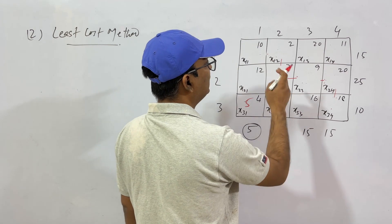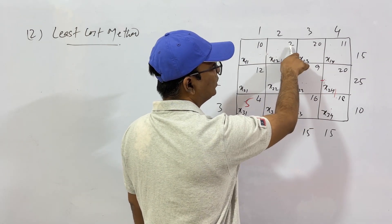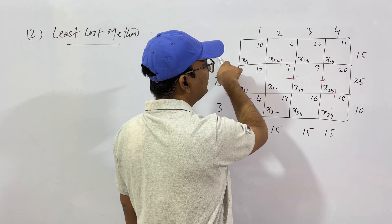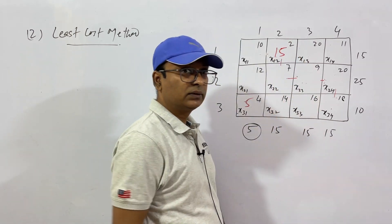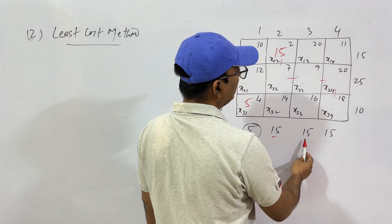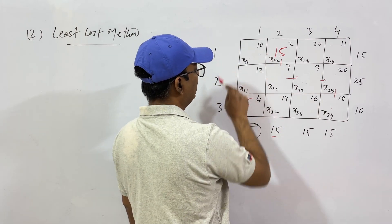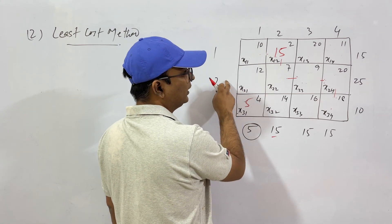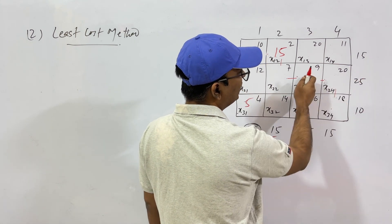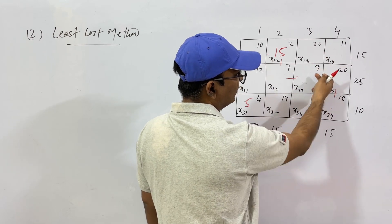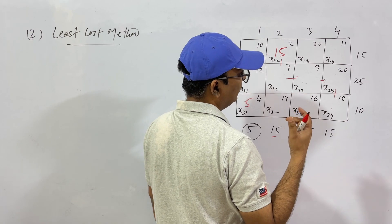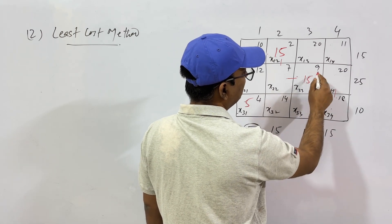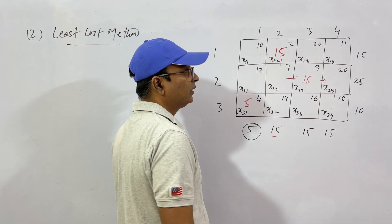Move to the second column. The least cost is 2. The demand is 15 — can this source supply 15 units? Yes. So assign 15 to this cell. For the third column, the demand is 15. Sources 1 and 3 are either closed or exhausted, so the only option is source 2, which can produce 25 items. Allocate 15 from the second source.